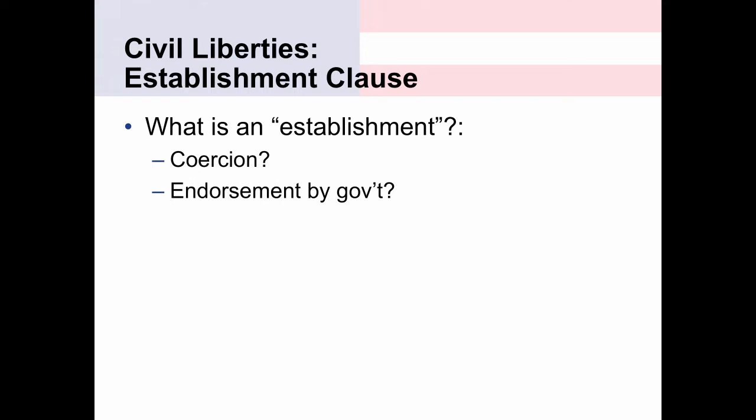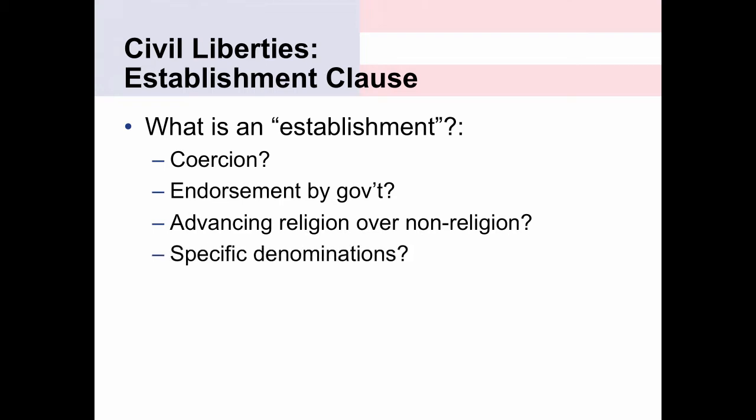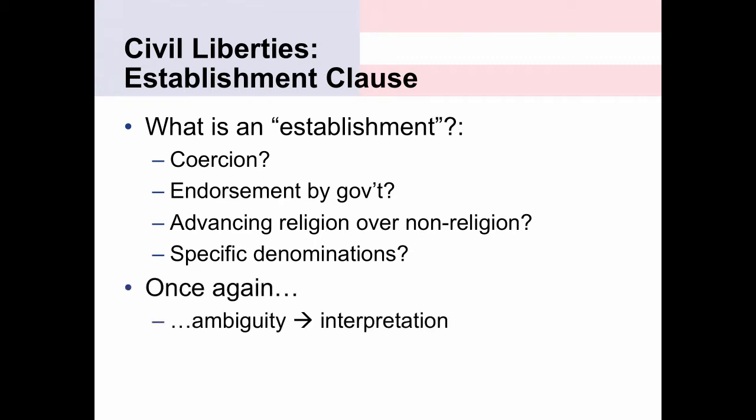Would establishment be endorsement by government if, for instance, a local government came out and said that the official religion of the government is Christianity or particularly a denomination of Christianity? Would that represent an establishment? And what about religion over non-religion? Would simply promoting the idea that government endorses a view of God discriminate or be an establishment of religion over atheism or agnosticism? And even within a broad religious category, what about specific denominations? Is it okay for government to benefit one denomination over another? This highlights that ambiguity in the meaning of words in the Constitution opens a door for the Supreme Court to interpret their meaning and to rule about the limits and the boundaries of the Bill of Rights.